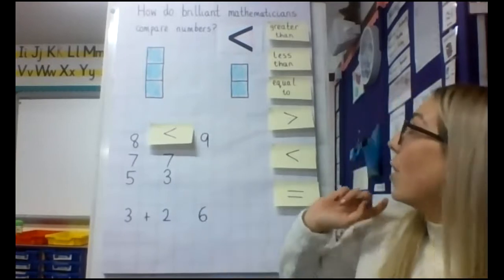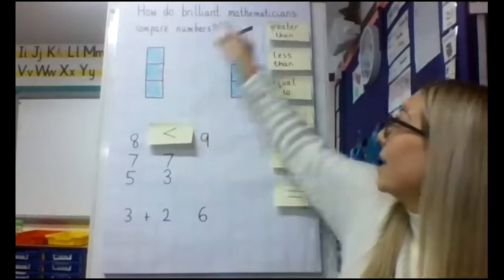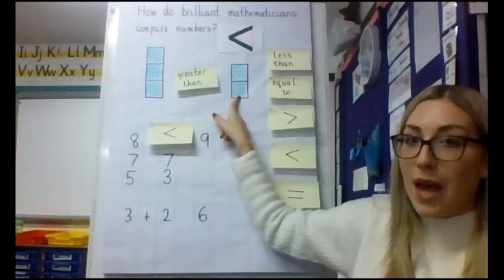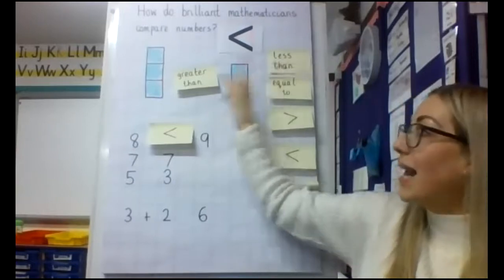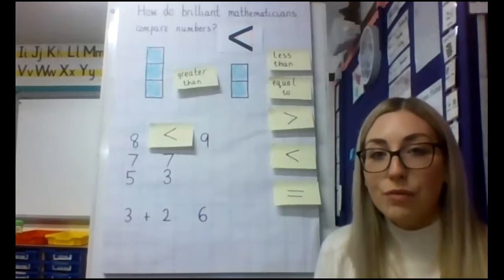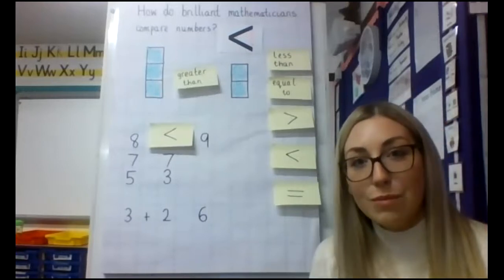And we have been using language to compare the two amounts, the two numbers. So for example, I would say that three is greater than two. And I would say that two is less than three. That's the terminology that we have been using, but then recently we have been introducing these symbols.